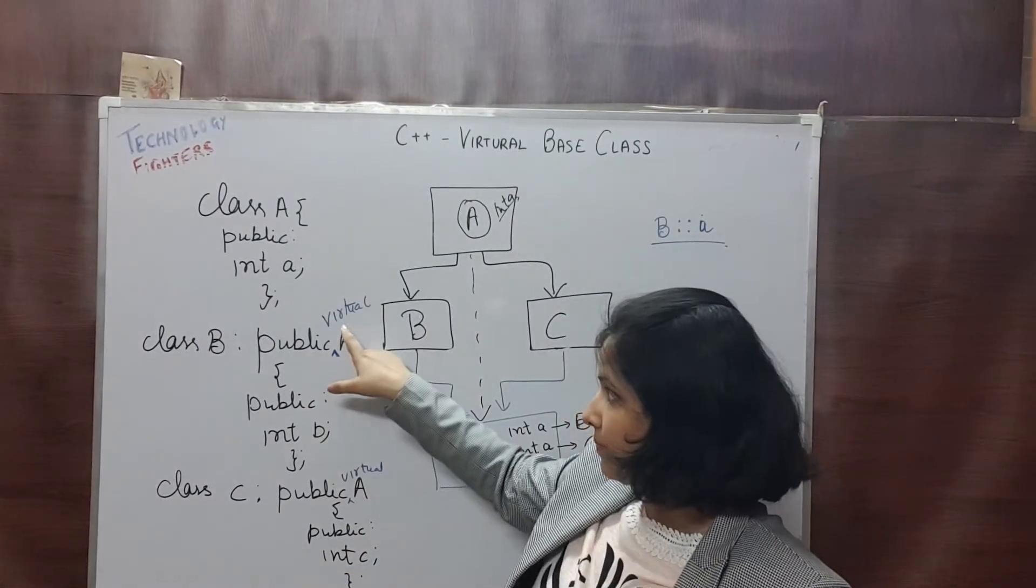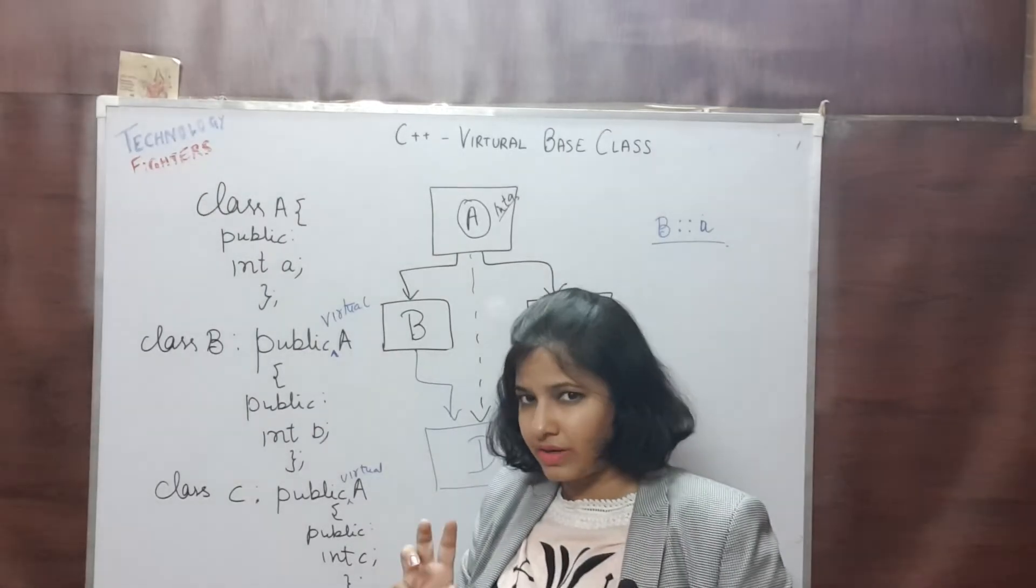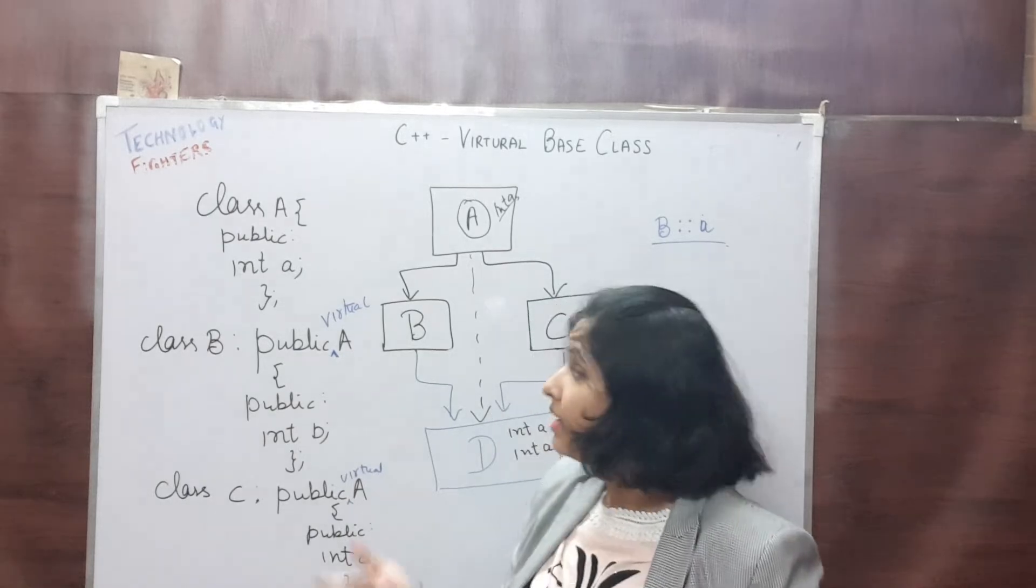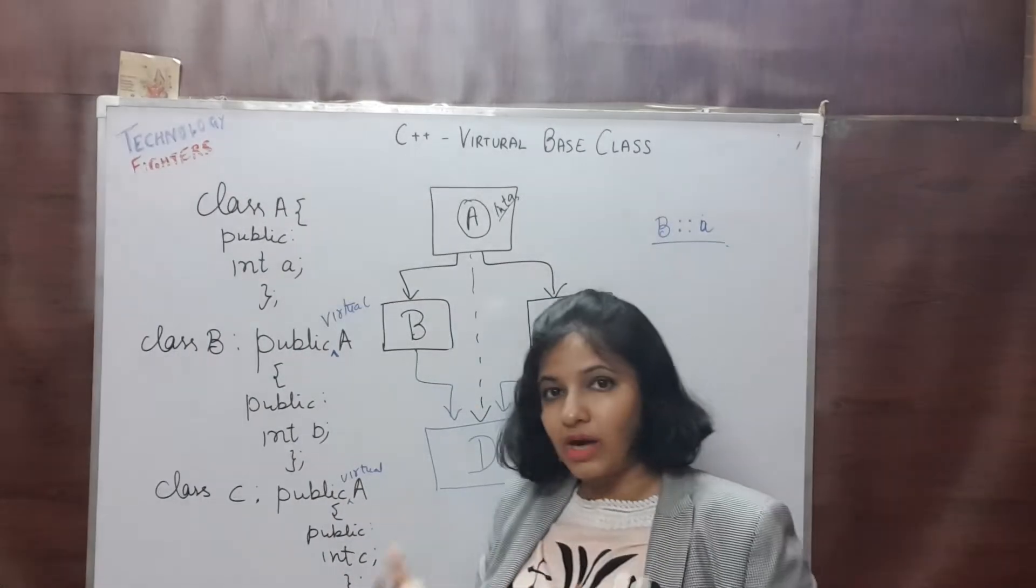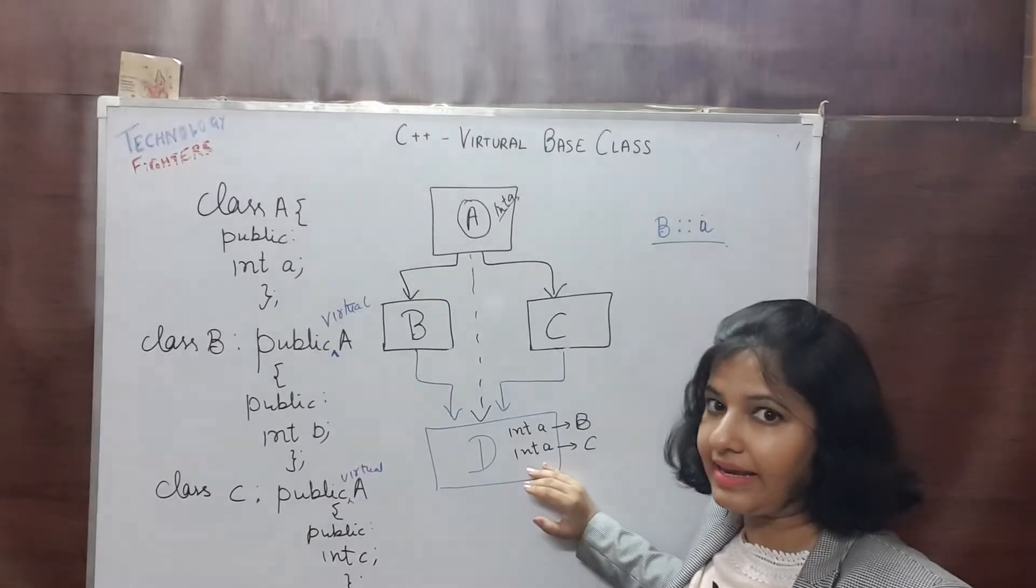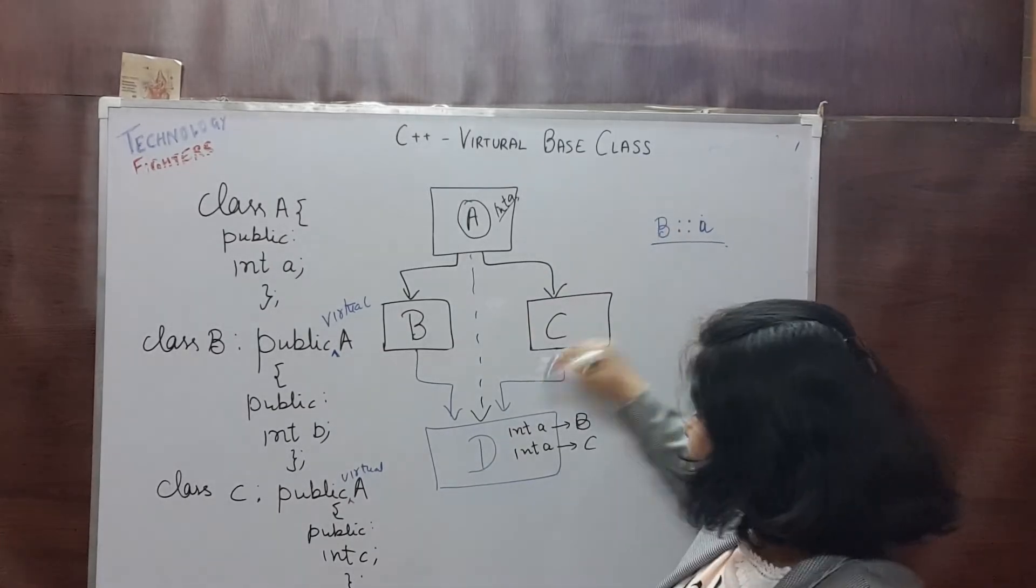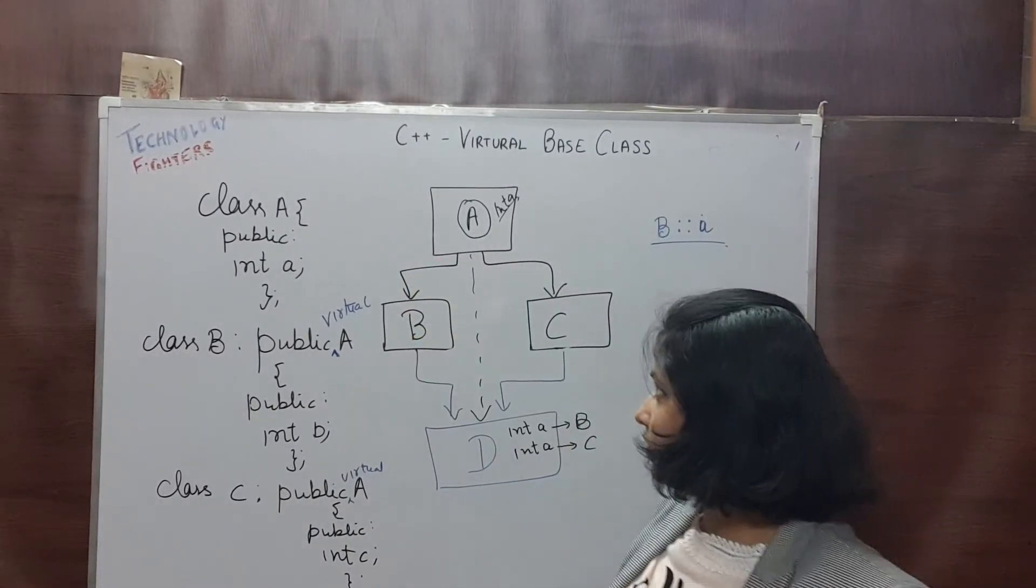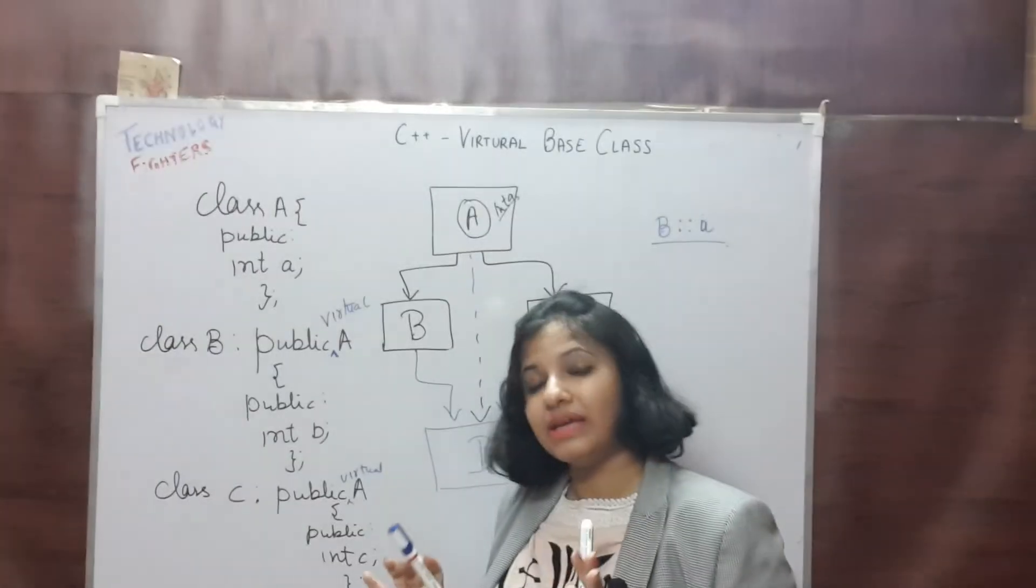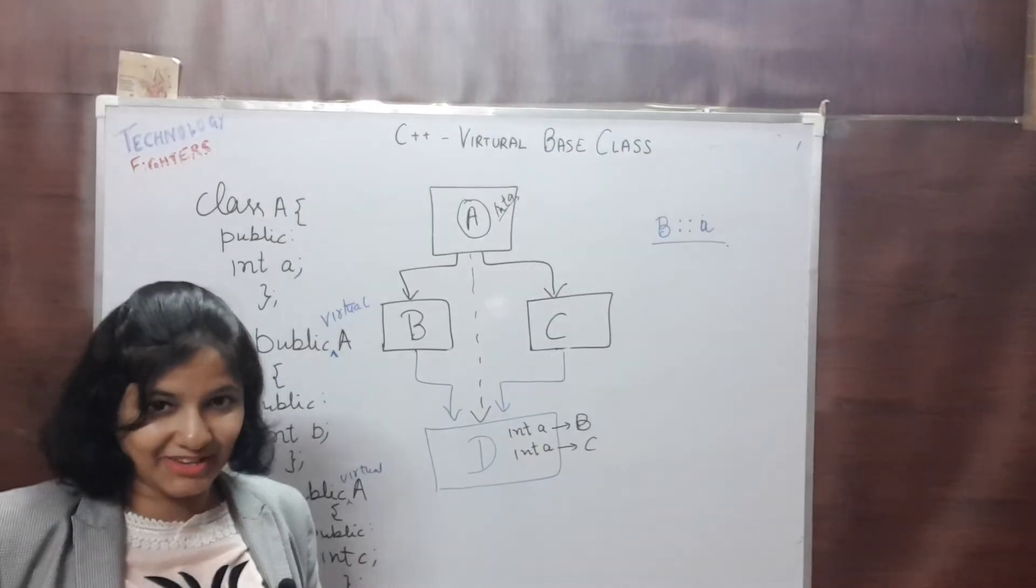How we can do it? We will make public virtual A. We will just include one more keyword, that is virtual. By making it virtual, compiler will ensure class D only gets single copy of class A. Maybe any number of classes can be derived from A to B, but we will get only single copy. So this is the concept of virtual base class. Thank you.